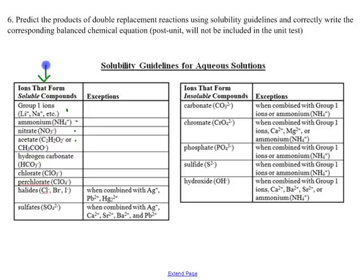Any compound with ammonium will be soluble. Any compound with nitrate is soluble, any compound with an acetate is soluble, any compound with a hydrogen carbonate, a chlorate, a perchlorate — and any with the halides or the sulfates are soluble compounds, and we would say that these are aqueous.